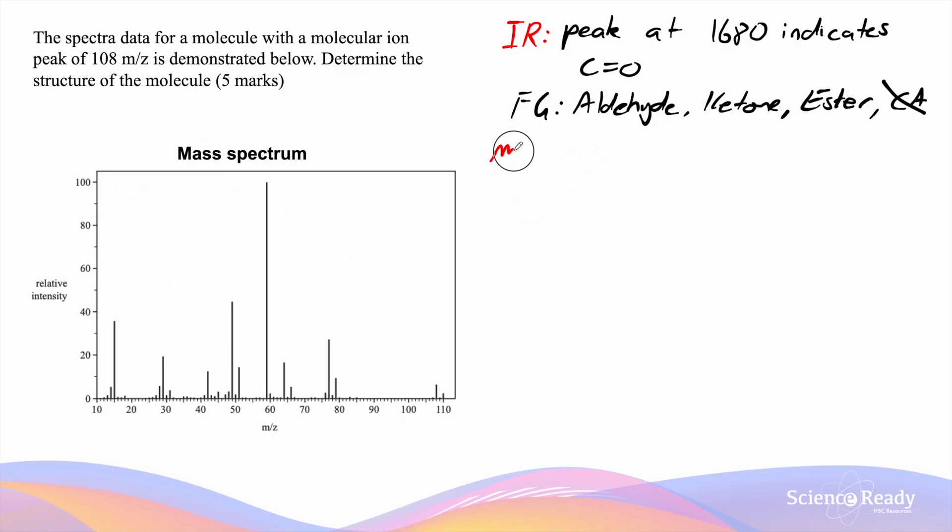Next we'll move on to the mass spectrum. The question indicates that we have a molecular ion peak at 108 mass to charge ratios. That is this peak over here.